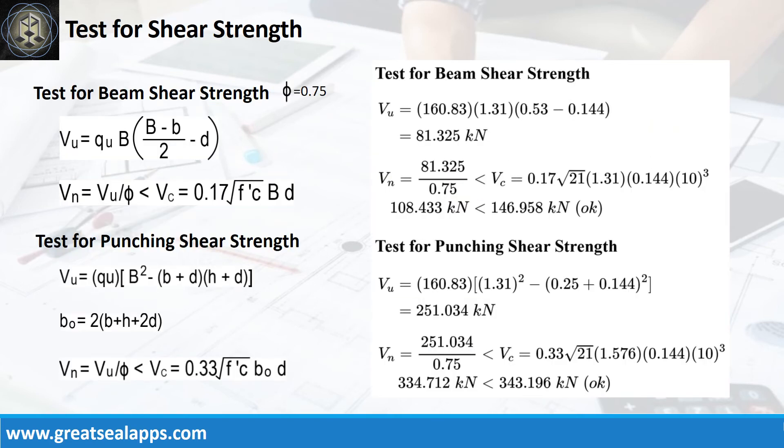The factored beam shear force is 81.325 kN. The nominal force is 108.433 kN less than 146.958 kN concrete capacity. The factored punching shear force is 251.034 kN. The nominal force is 334.712 kN less than 343.196 kN concrete capacity.